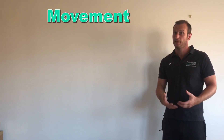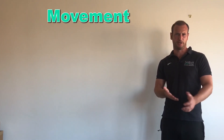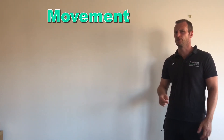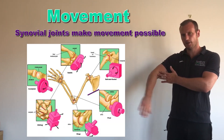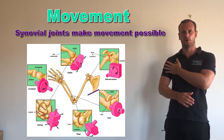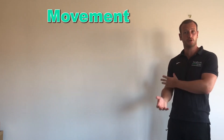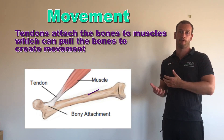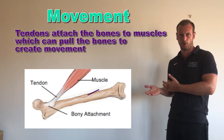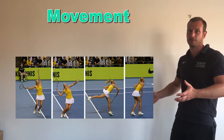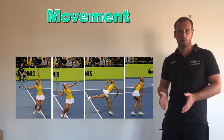The next function of the skeleton is movement, which is extremely important in physical activity. Movement is possible because of the skeleton for two reasons: firstly, because we have synovial joints — movable joints — in the body; and secondly, we have muscles attached to the bones via tendons, which makes movement possible at a joint. An example would be serving a ball in tennis or running with a football.